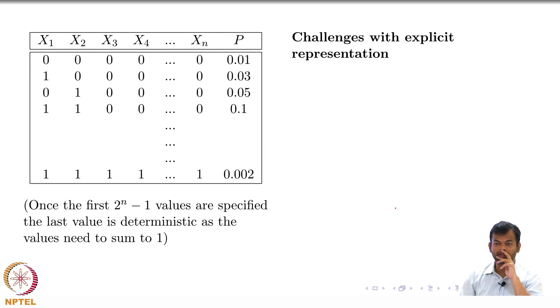Now, what is the problem with this explicit representation, where I specify all the 2 raise to n minus 1 variables? There are 3 problems and you tell me what do I mean by each of these 3 words. One is computational, the other is cognitive, the third is statistical.